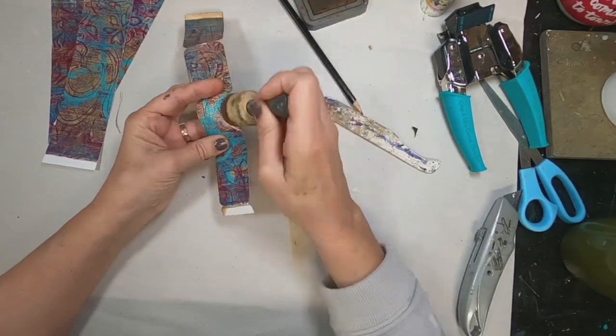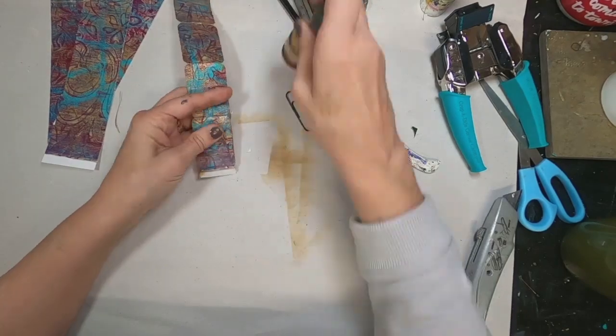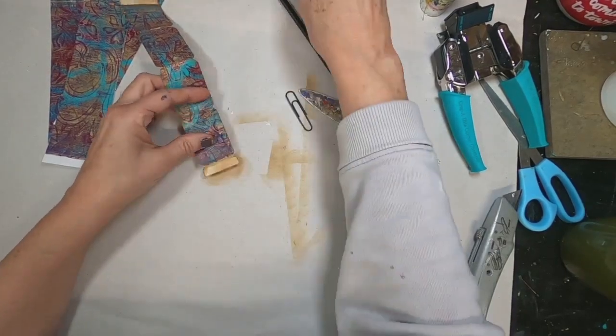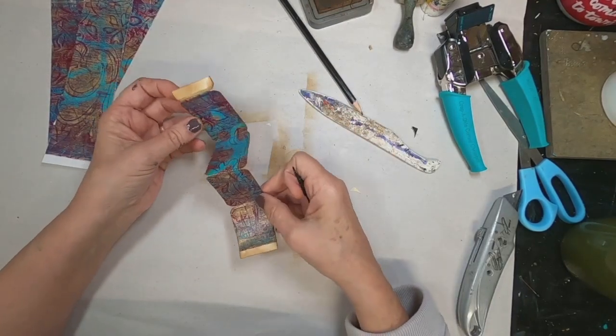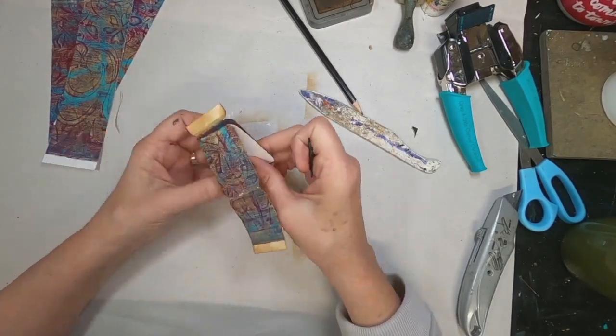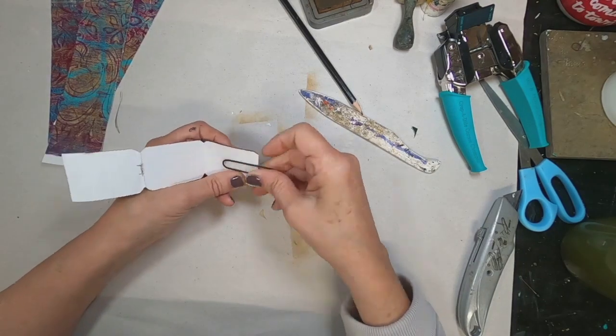Depending on what gel press print I have, I'll choose my ink accordingly. I think I have a green, a set of green that I pull out the citrus, twisted citron.